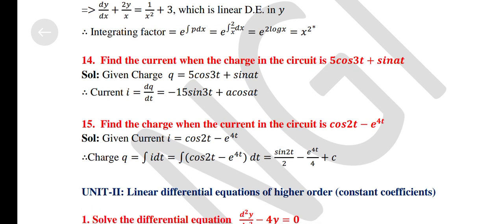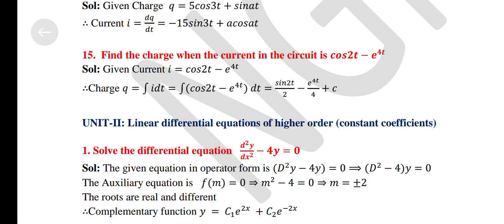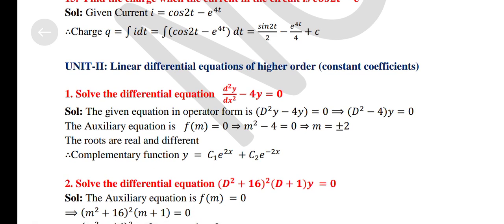Find the current when the charge in the circuit is φ cos 3t + sin 3t. Find the charge when the current in the circuit is cos 2t − e^(4t).